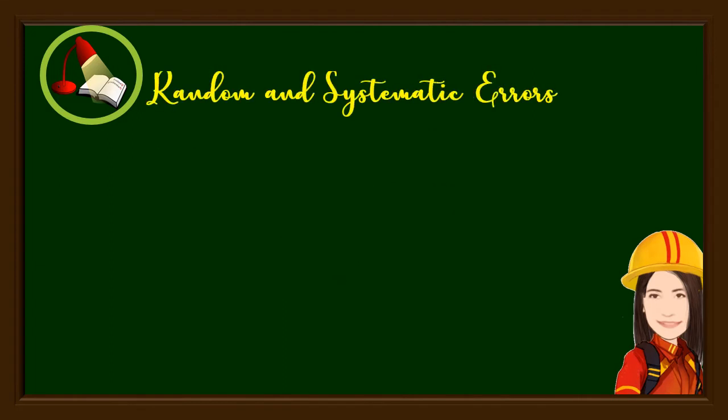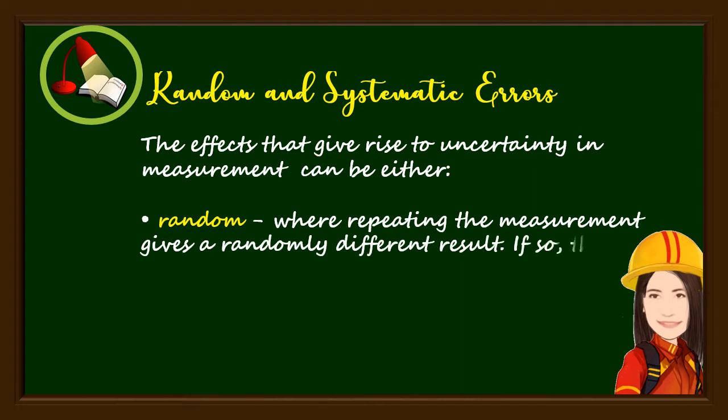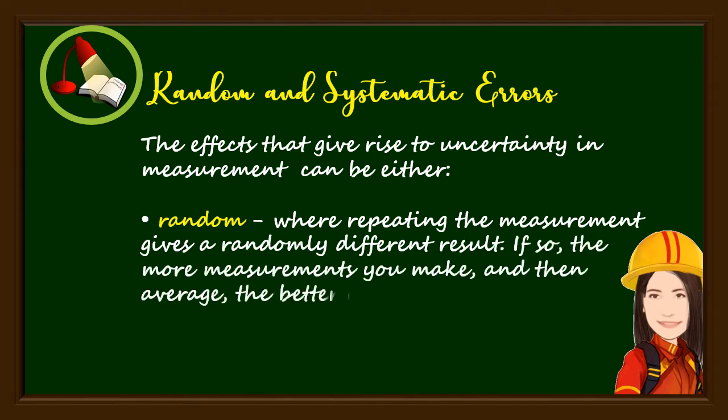Random and systematic errors. The effects that give rise to uncertainty in measurement can be either random, where repeating the measurement gives a randomly different result. If so, the more measurements you make and then average, the better estimate you generally can expect to get.